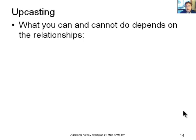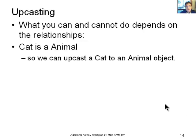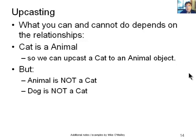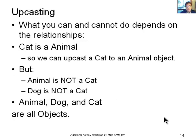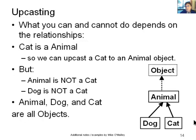What you can and cannot do depends on the relationships. So cat is an animal, so we can upcast cat to an animal object. That's quite okay. But animal is not a cat. The relationship's one way. Cat is an animal, but animal is not a cat. And dog is not a cat. So if we try and do any of those casts, we'll end up with a mess. Compilation errors. And of course, animal, dog, and cat are all objects. So we could cast everything back to object if we wanted to as well. And don't forget that's our hierarchy for these classes that we're talking about in this example. So it all depends on your relationships.